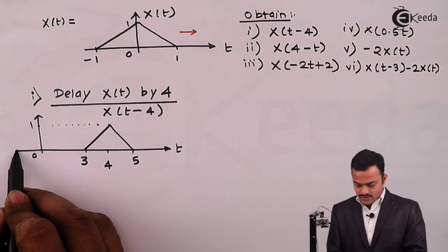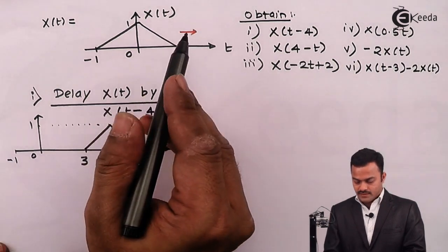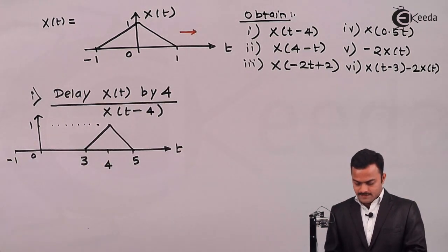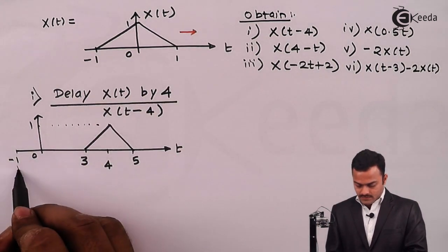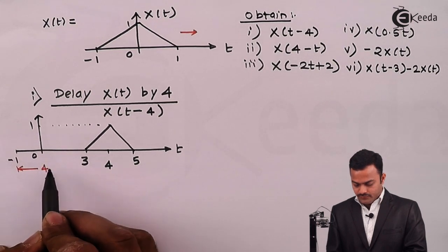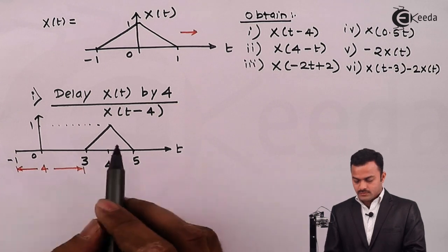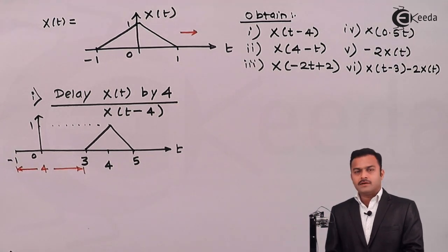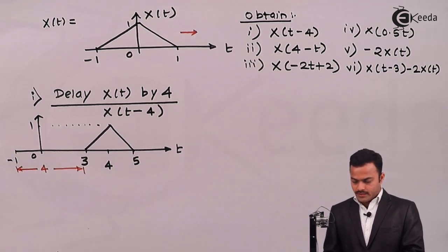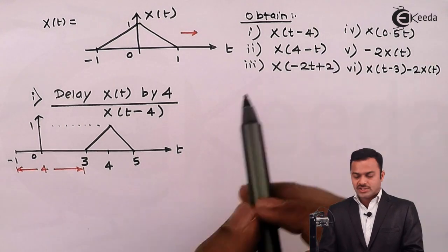The signal was originally starting from minus 1, but because of this shift it moves by 4 units. That is X of t minus 4. Let's go to the next point: X of 4 minus t.